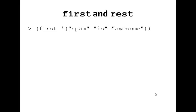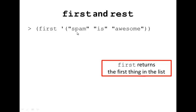The accessors we're going to use are first and rest. First takes a list and returns the first element. So first returns the first thing in the list.